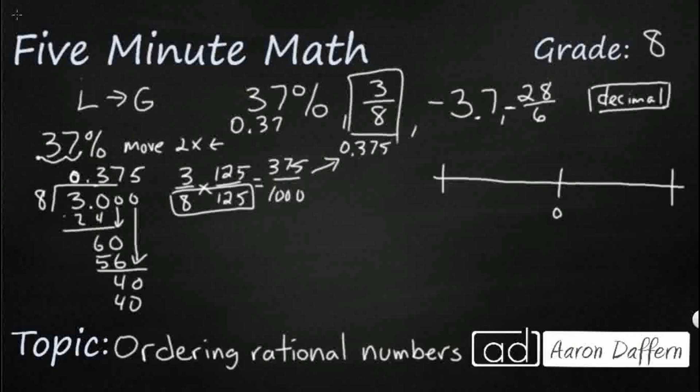So really, the only one we've got left is this negative 28 sixths, right? So we've got two positives right here. So we can go ahead and just put super, super close.